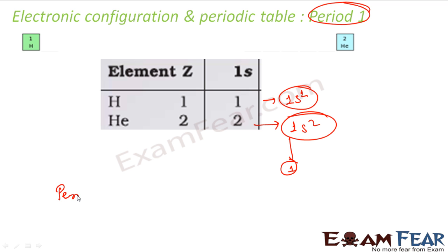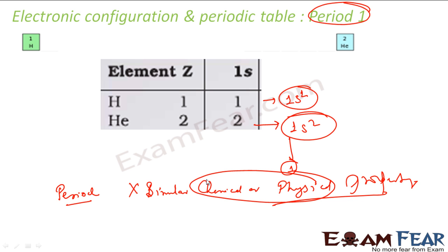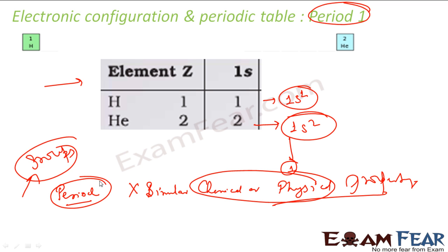When I am writing elements of a period, they will not have similar chemical or physical properties — they will all have different properties. For grouping of similar chemical and physical properties, we talk about groups. When you talk about groups, everybody in the group has similar properties. The only thing a period shares is that the valence shell — the outermost valence shell — determines which period it belongs to.